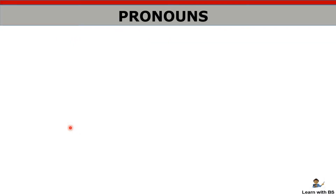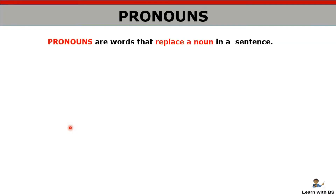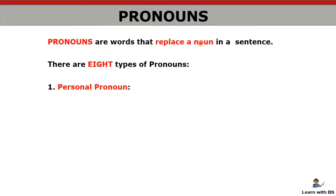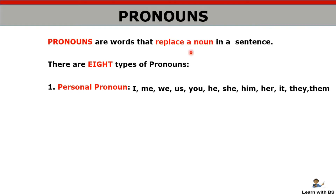Next we have pronouns — words which replace nouns. When something is used in place of a noun, that is called a pronoun. Pronouns are of eight types. First, personal pronoun: I, me, we, you, he, she — like this. Then possessive pronoun — which shows possession: mine, ours, yours, his, hers — these are possessive pronouns.